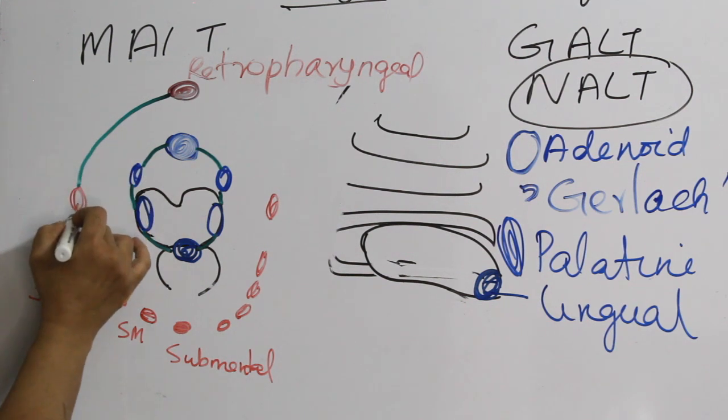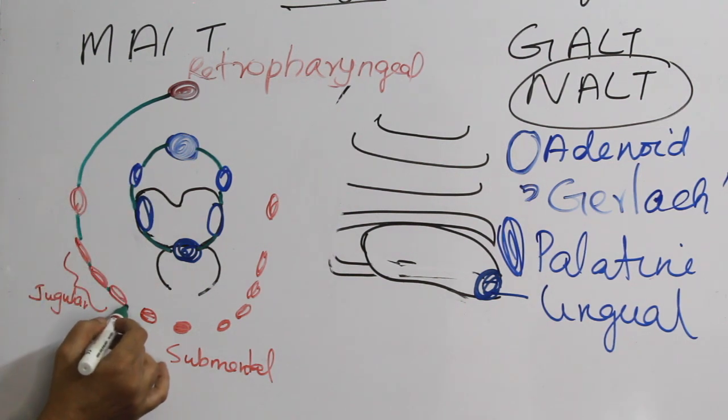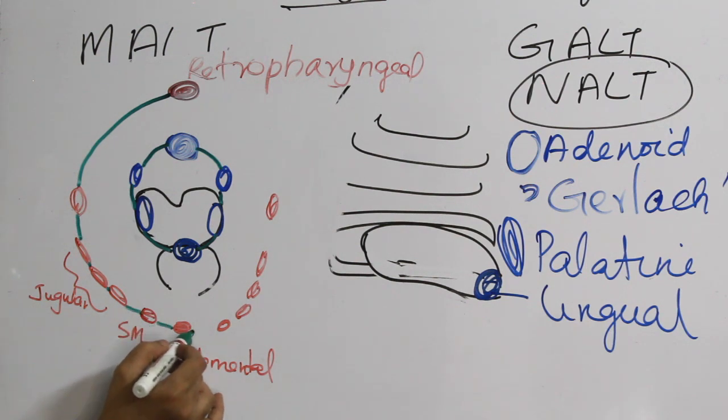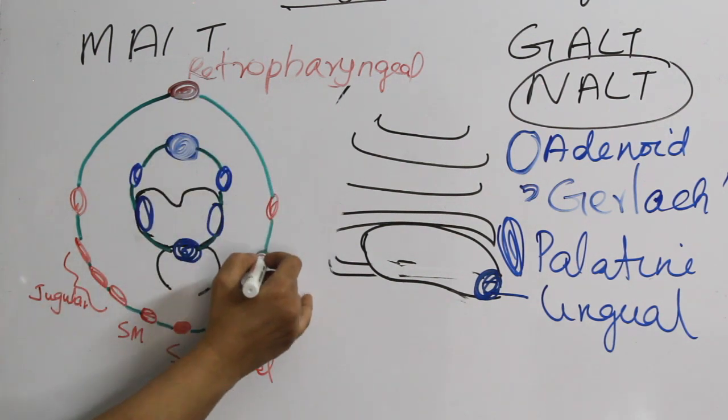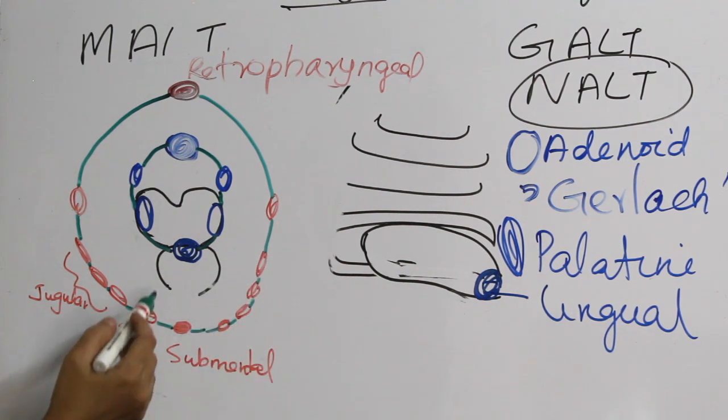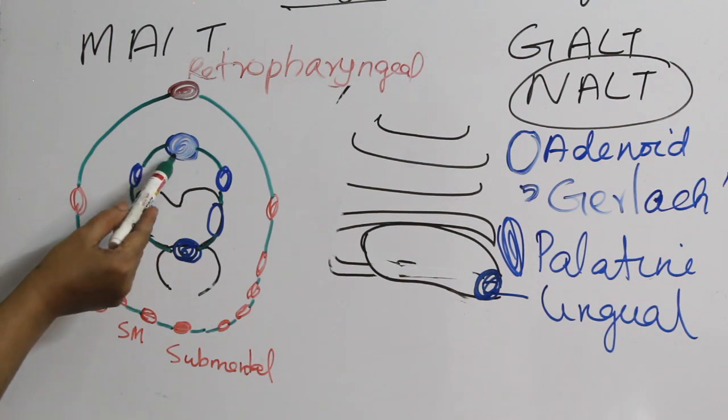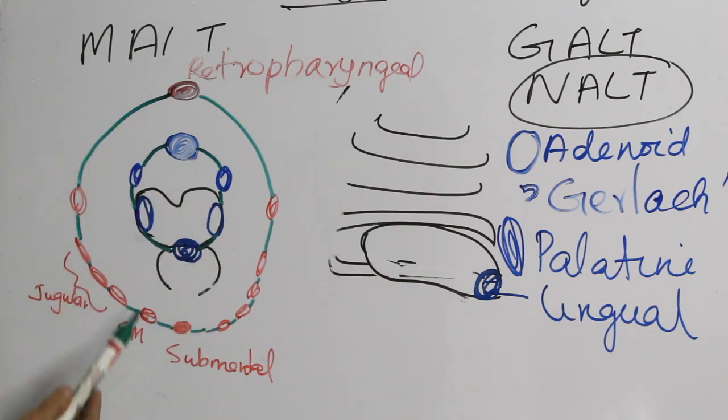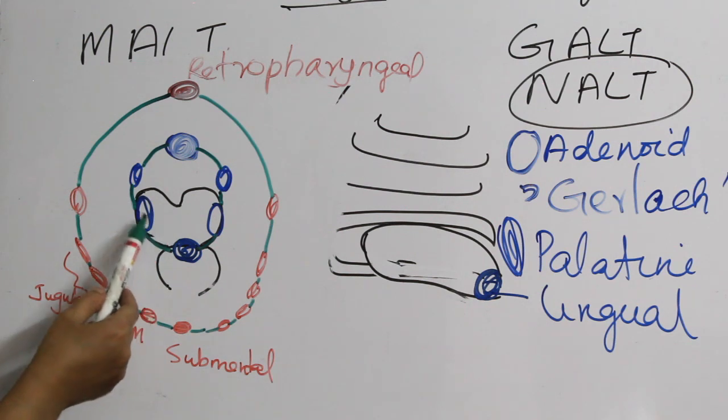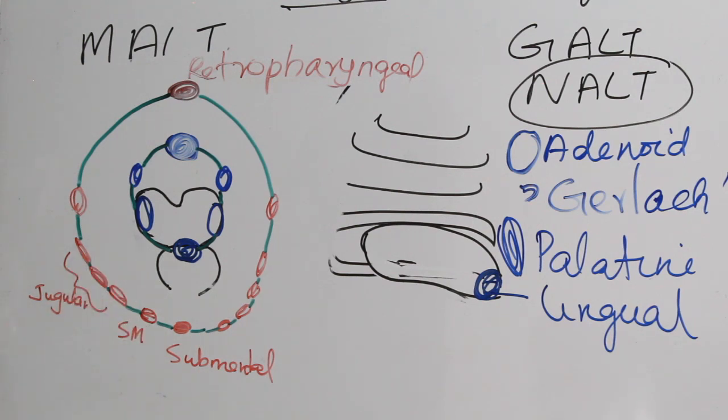So retropharyngeal, then jugulodigastric, upper jugular, mid and lower jugular chain, submandibular and the submental. Again it forms a ring likewise here, forming the outer ring. So the Waldeyer's ring inner ring is formed by adenoid or the nasopharyngeal tonsil, then the tubal tonsils on the lateral wall of nasopharynx, palatine tonsils or the tonsils on the lateral wall of oropharynx, and the lingual tonsils situated on the posterior third of tongue. That constitutes the inner ring, and the outer ring are formed by the lymph nodes present in the neck: the retropharyngeal, jugulodigastric, jugular chain, submandibular, and the submental.